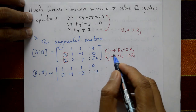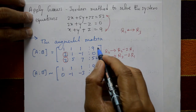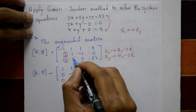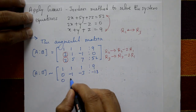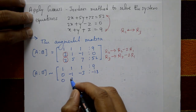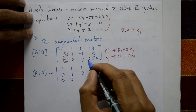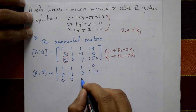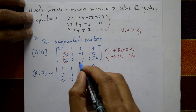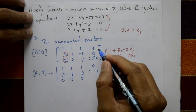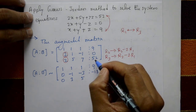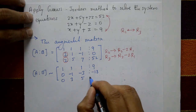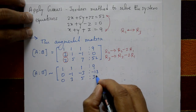For R3, multiply R1 by -2 and add: 0, then -2 + 5 = 3, then -2 + 7 = 5, and -18 + 52 = 34. So R3 becomes [0, 3, 5 | 34].